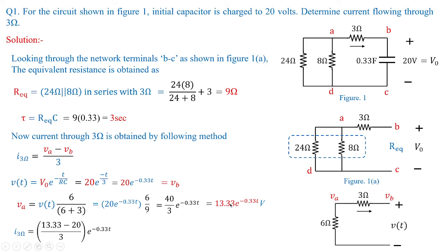In both VA and Vb, e to the power of minus 0.33t is a common factor, so taking it outside and dividing the difference of the two values by 3 gives the current as minus 2.22 e to the power of minus 0.33t amperes. This is how you solve these kinds of problems. This approach can be employed for different problems asked in previous exam papers to find current or voltage in a source-free RC circuit.